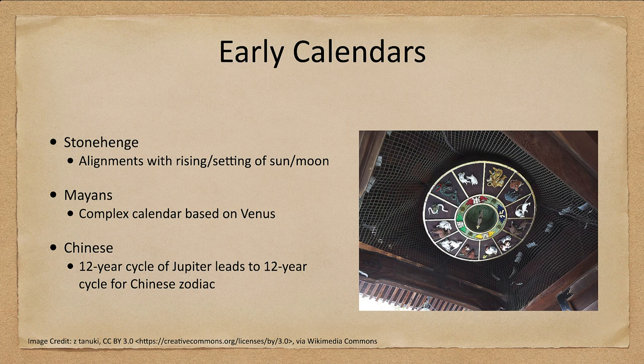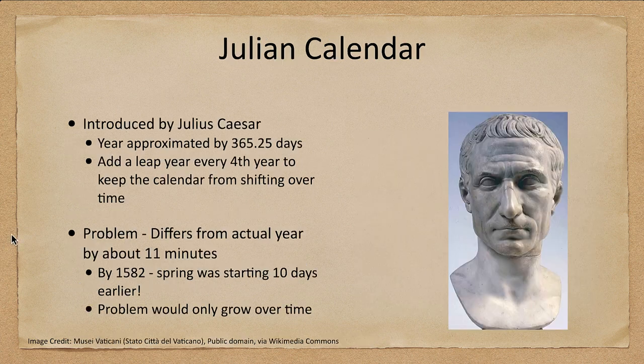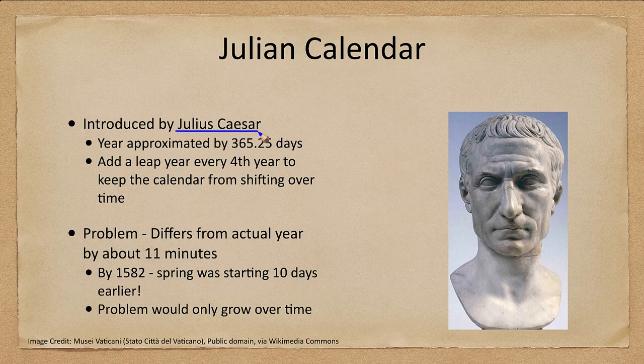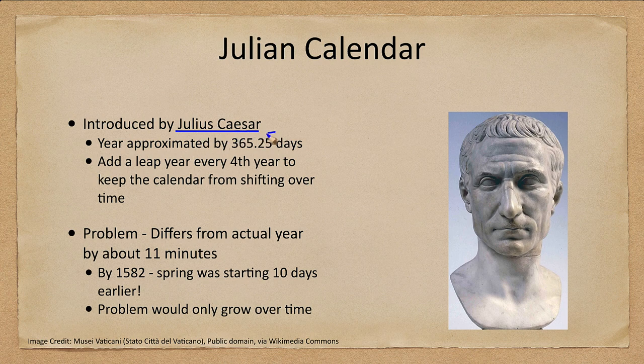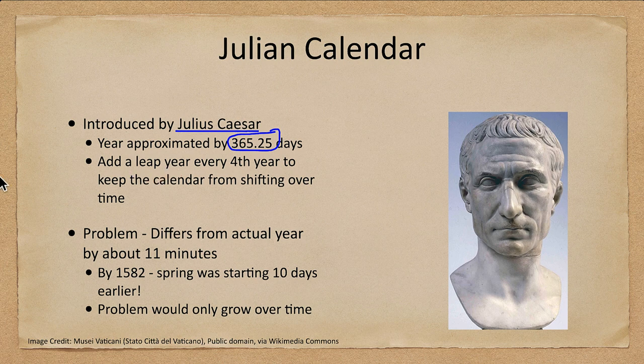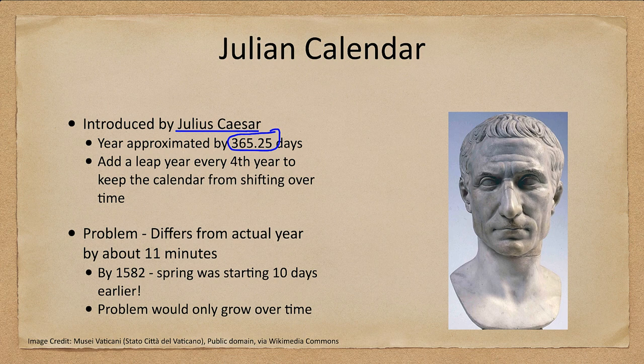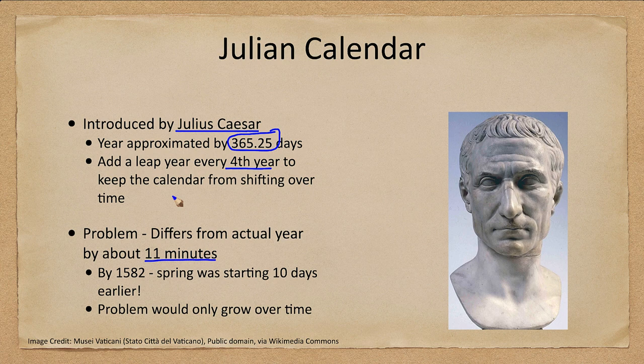So our calendars, one of the earlier ones was introduced by Julius Caesar who gave us the Julian calendar. And in this case the year was approximated to be 365 and a quarter days. Well if you remember it was 365.2422, that's a pretty good approximation. There's a difference of only about 11 minutes. So this is great. Add a leap year every fourth year to keep the calendar from shifting too much over time. And this worked out very well for a while.